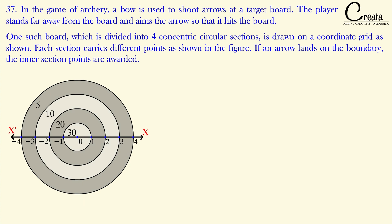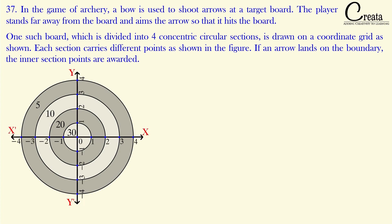Here we have the x-axis and y-axis. The concentric circles are at a distance of 1 unit apart — the distance between all these concentric circles is 1 unit. So all these boundaries lie at distances 1, 2, 3, and 4 from the origin.